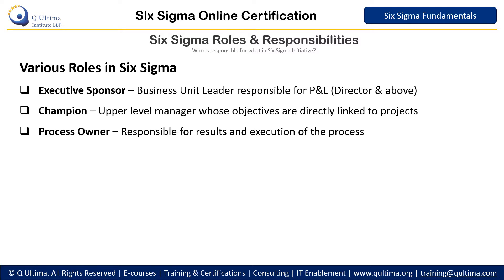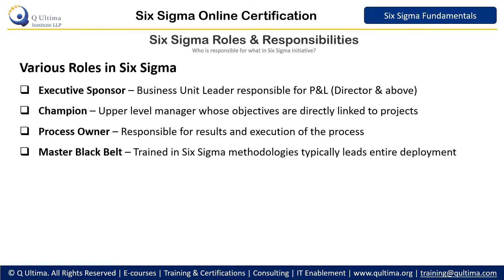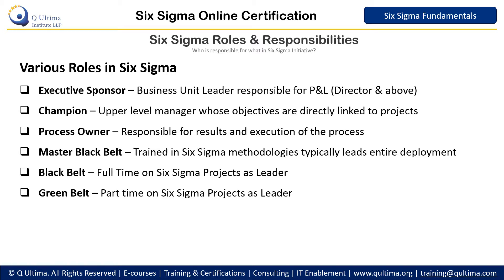The process owner is responsible for results, and execution of the process — on which we are doing the Six Sigma project — is his responsibility. Master Black Belt is trained in Six Sigma methodologies and typically leads the entire deployment. Black Belt is full-time on a Six Sigma project as a leader and knows Six Sigma well. Green Belt is part-time on Six Sigma projects as a leader and may have to consult the Black Belt sometimes.